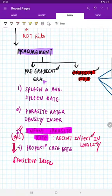Previous days in pre-eradication era, they have been using spleen and average spleen rate. For spleen rate, adults are not included because adults have other conditions that involve spleen. Average spleen rate, then there is parasite rate and parasite density index. Then infant parasite rate.